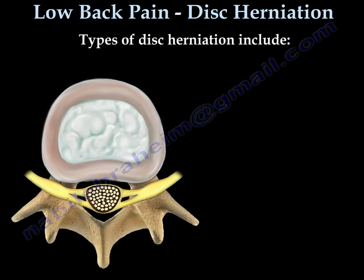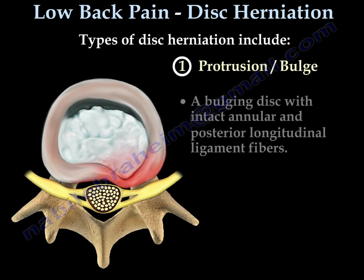There are three types of disc herniation. Number one is a protrusion or a bulge. This is a small bulge of the disc with intact annular and posterior ligaments.